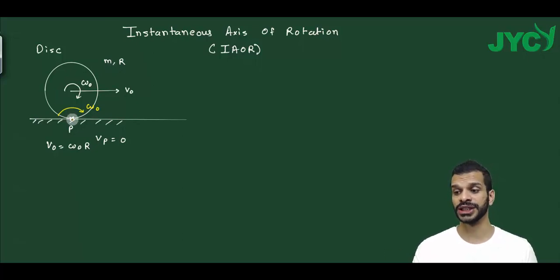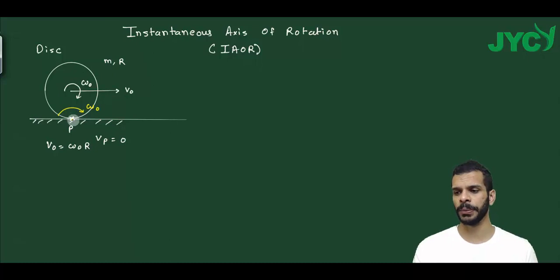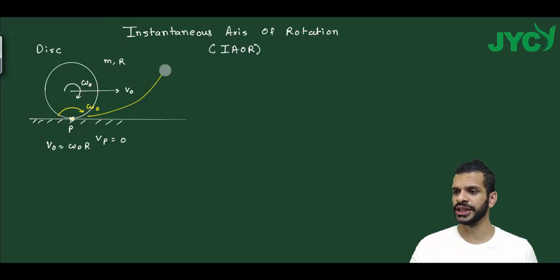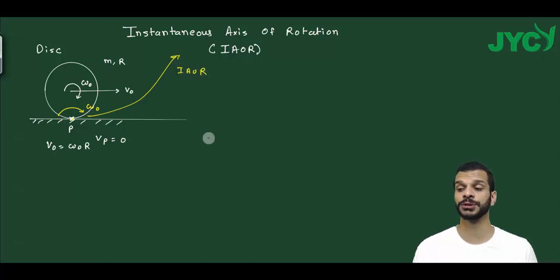But why is it called instantaneous? Because the next instant there is another point which has velocity zero — the axis moves. So this is the word 'instantaneous' axis of rotation — it is valid only for a particular instant.